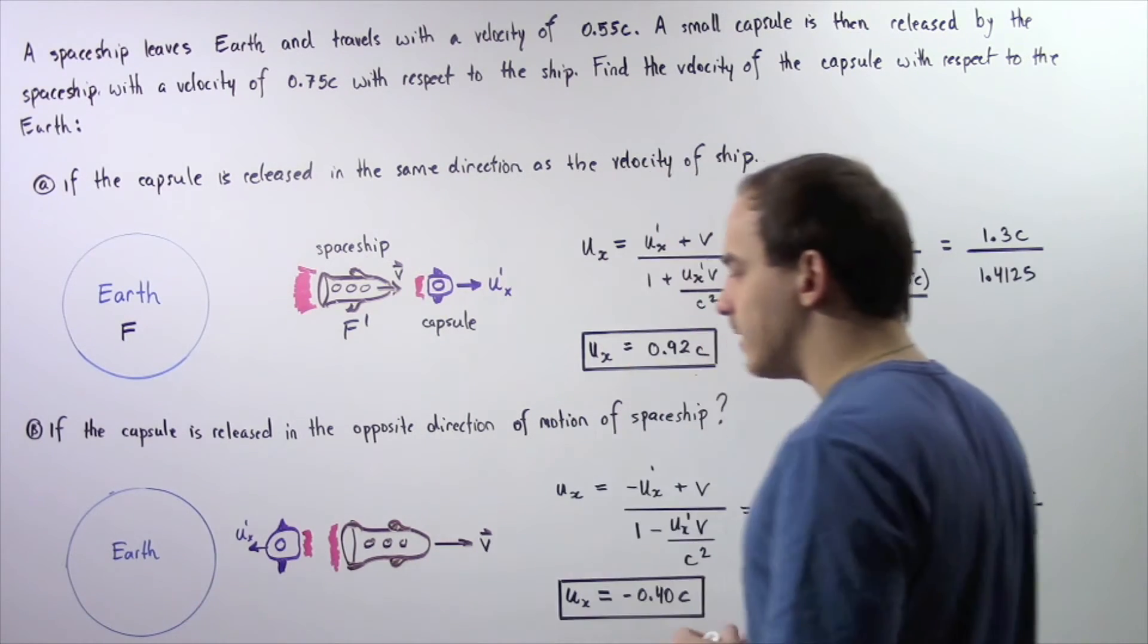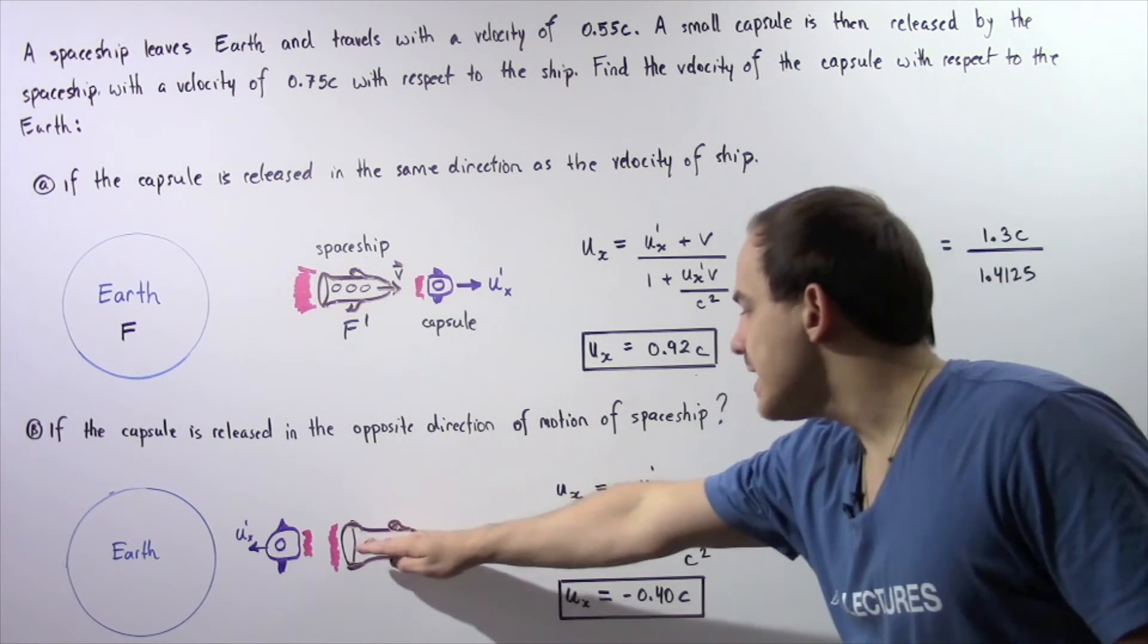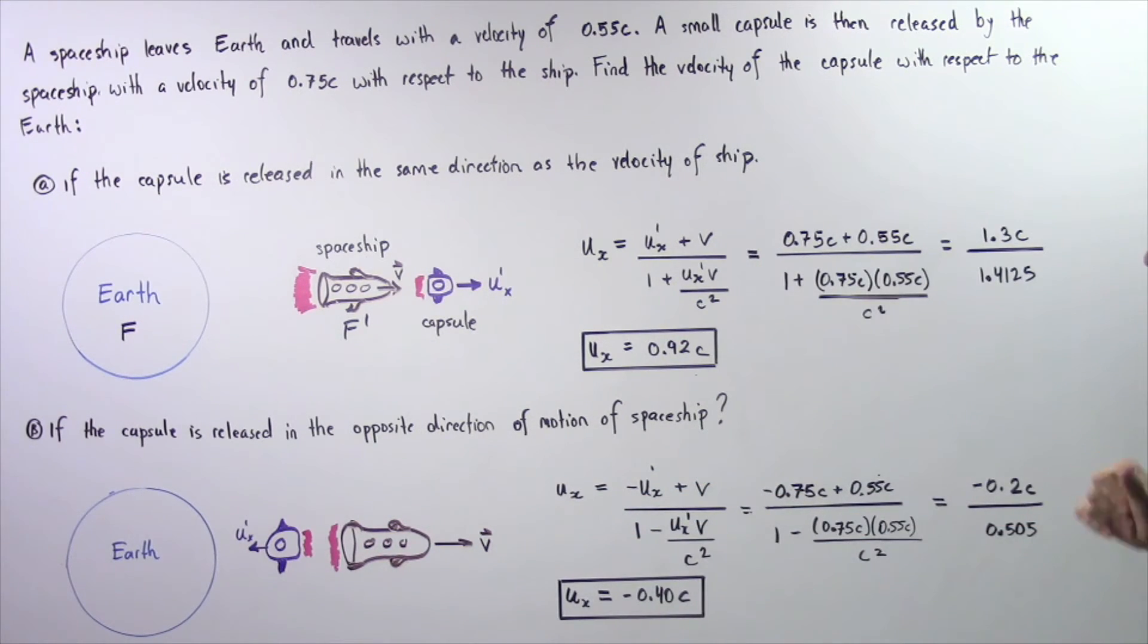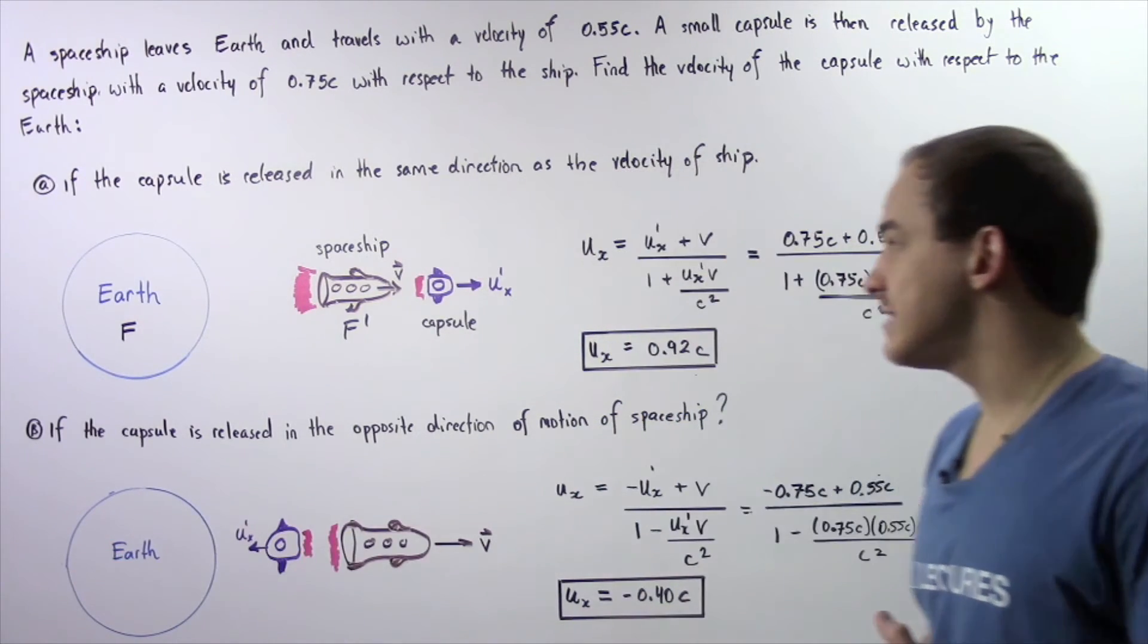Let's look at the following diagram. Now the capsule, instead of being released in the positive direction along the x-axis, it is released in the negative direction along the x-axis.